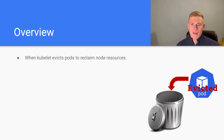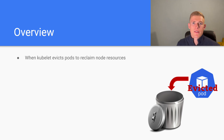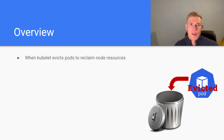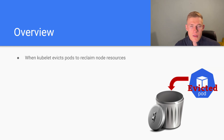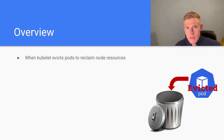What exactly is node pressure eviction? It is when the kubelet on a node evicts a pod to reclaim node resources. Essentially, our Kubernetes node has reached a point where it is almost exhausted of some resource, and at this point we need to evict the pod in order to free up some of that resource. Generally, when we're talking about resources, we're looking at memory, disk, and processes in the case of node pressure eviction.